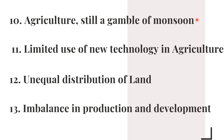The next point is that agriculture is still a gamble of monsoon. The productivity of the agricultural sector depends upon the monsoon. Failure of rainfall or excessive rains and floods in certain parts of the country will definitely affect agricultural productivity. Although much attention has been given to irrigation since the 1950s and 60s, agricultural production still largely depends upon the monsoon.